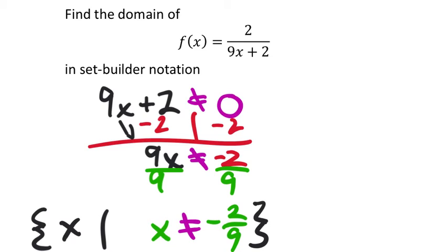If you made x negative 2 9ths, you'd get a 0 as the denominator, which can't happen because that's an undefined value. And so we just show the value that won't work.